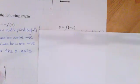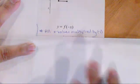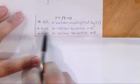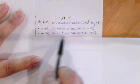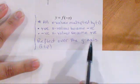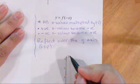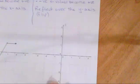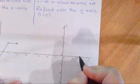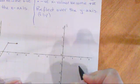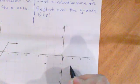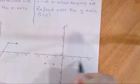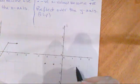Now let's look at y equals f of negative x. Any x values get multiplied by negative one — positive x values become negative and negative x values become positive — and this looks like a reflection over the y-axis, flipping this way. So we look at all x values: x equals positive two becomes negative two, and x equals one becomes negative one, keeping the y values exactly the same.